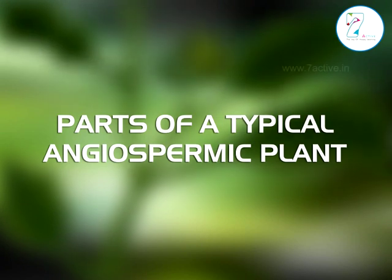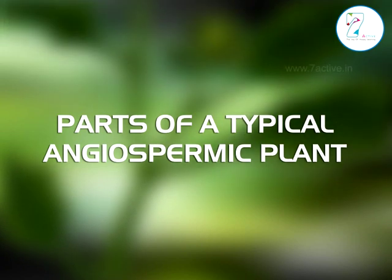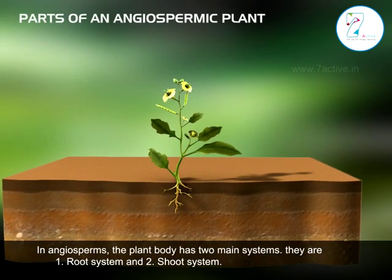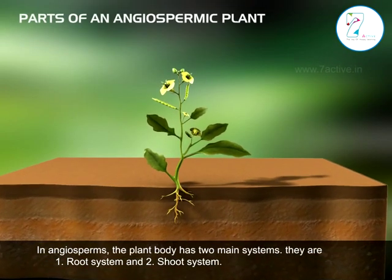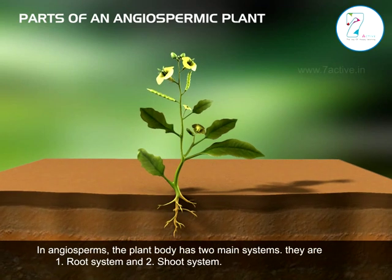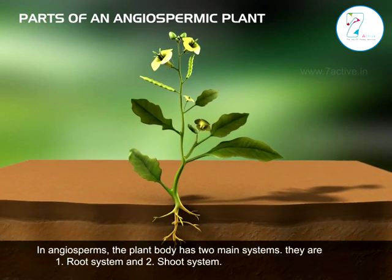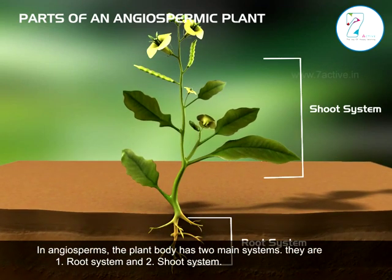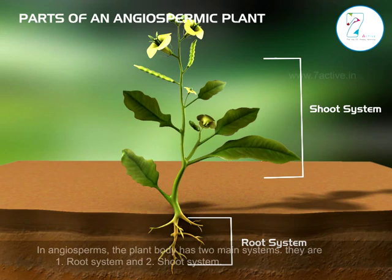Parts of a typical angiospermic plant. In angiosperms, the plant body has two main systems: root system and shoot system.